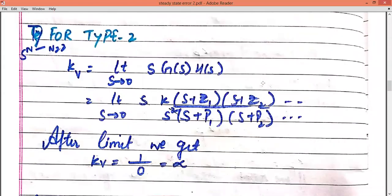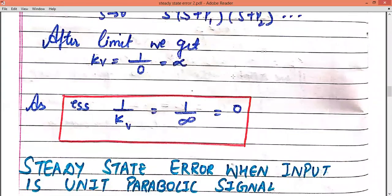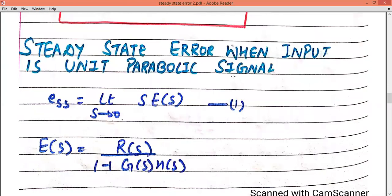Now we check for the type 2 system. For KV, we write KV equals to limit S tends to 0, S into G(S) into H(S). In the next step we use S raised to power 2 because this is for a type 2 system, where S raised to N equals 2. This S squared will be cancelled out, and ultimately when we apply the limit, KV equals to 1 upon 0, which equals to infinity. So ESS equals to 1 upon KV equals to 1 upon infinity, which equals to 0. For type 2 system with unit ramp input, ESS equals to 0.